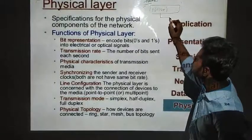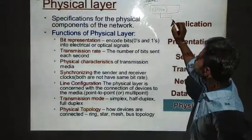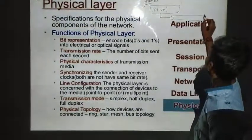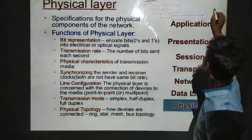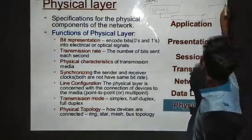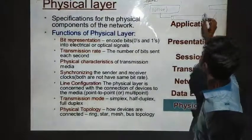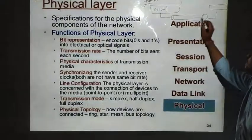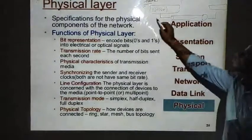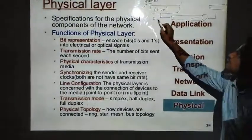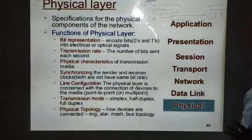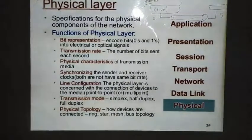These raw bits will be sent from one system to another through a transmission medium. The transmission medium is used to transmit all these data bits. So system B will receive the data from system A in the form of raw bits using the physical layer.